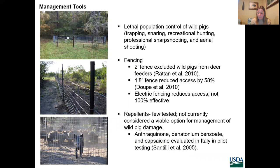The most common method for reducing damage is lethal population control of wild pigs, which includes trapping, snaring, recreational hunting, professional sharpshooting, and aerial shooting. Other methods, such as fencing, may be useful in some limited circumstances — for example, excluding wild pigs from deer feeders or in small pastures — but fencing is often both labor intensive and cost prohibitive. Few repellents have been tested for wild pigs. A small number of olfactory repellents utilizing predator odors, or gustatory repellents utilizing bitter-tasting agents, are commercially available in Europe but have proven ineffective.